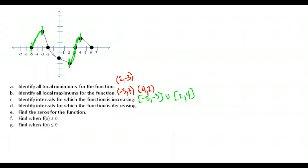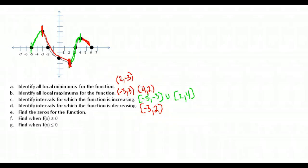Now for intervals of decrease — anywhere the graph has a negative slope or is going downward. From x equals negative three to x equals two, the graph is decreasing. And at the very end, from x equals four to x equals six, the graph is also going downward with a negative slope. So those are our two intervals of decrease.